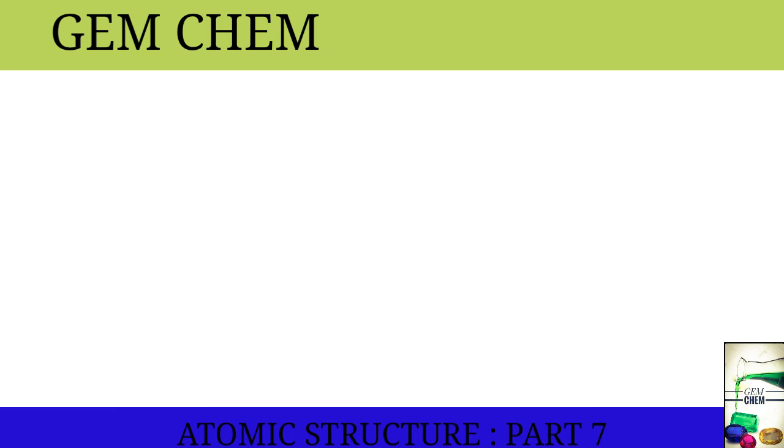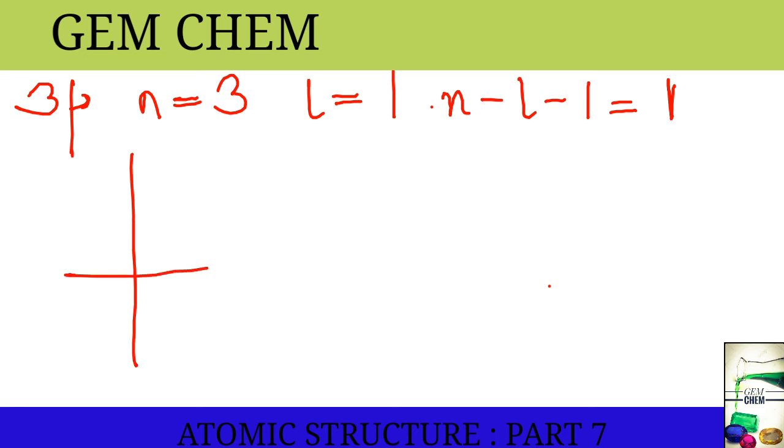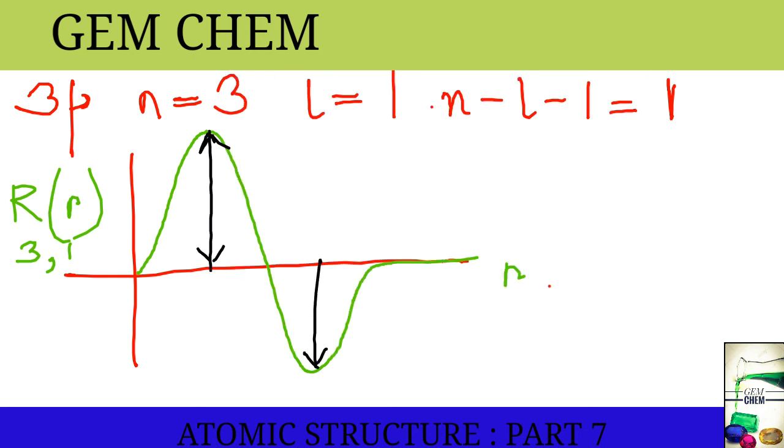If we construct the radial curve for 3p orbital, then our n will be equal to 3 and l will be equal to 1. So, the number of nodes will be n minus l minus 1, so it will be 1. Previously, we have seen the characteristics that p, d and f will start from origin. First, we write the axis's name 3, 1 and here it will be r and it will start from origin. And it will go down as there is 1 node and this will gradually meet. The height of this is much greater than the second one. It gradually decreases.